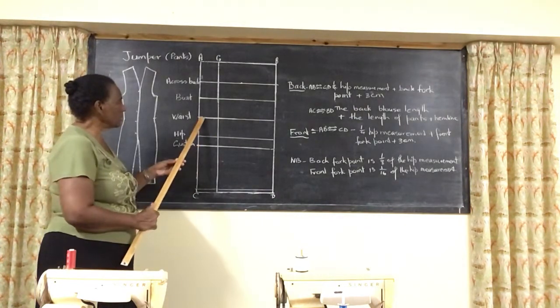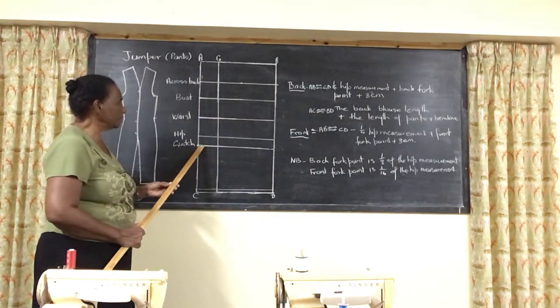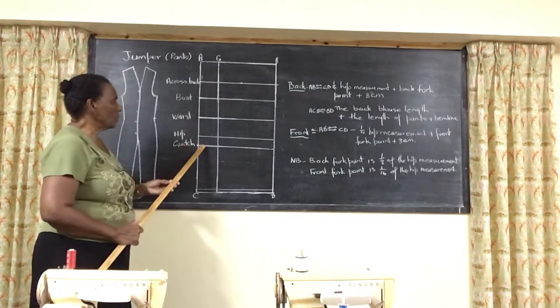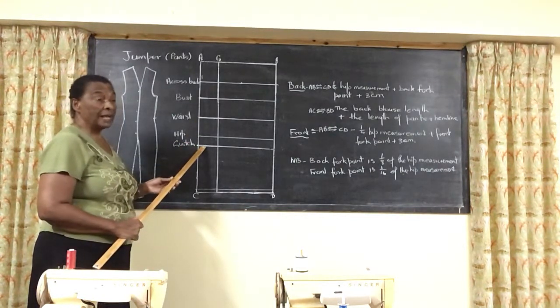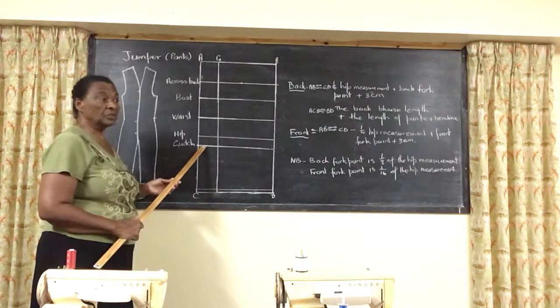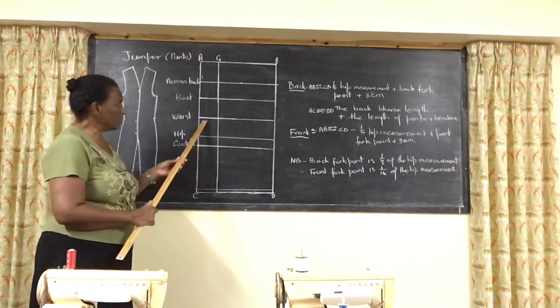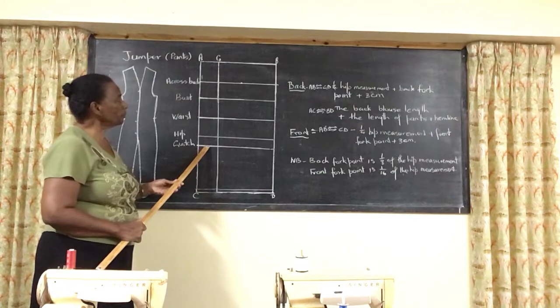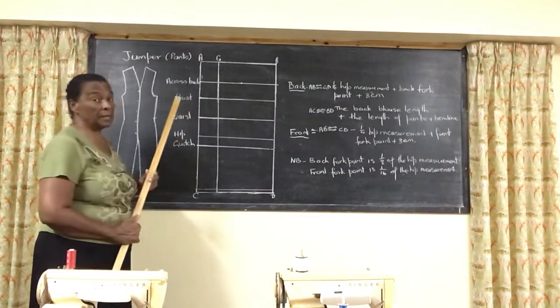Then the crotch depth is taken from the waist as well. So you measure down from the waist for the crotch depth. And again, you can look at the video which tells how to measure your crotch depth. So you will be able to get your crotch depth here. Alright, so all the cross lines are put in first.